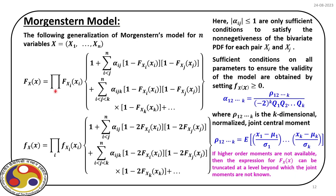Once we follow this extended model, we can develop the joint distribution for as many random variables as we have by simply increasing the index i. This allows us to address problems with multiple random variables following different types of distributions — which is more important for actual engineering problems, where we must deal with multiple random variables not always following the same distribution type. The key task is to find each qi value.